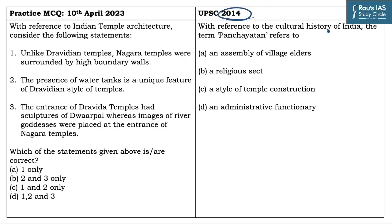In 2014, a specific question on temples was asked: 'With reference to the cultural history of India, the term Panchayatan refers to...' — with four options to identify the correct one. On similar lines, we have framed a practice MCQ: 'With reference to Indian temple architecture, consider the following statements.' The first statement says unlike Dravidian temples, Nagara temples were surrounded by high boundary walls.